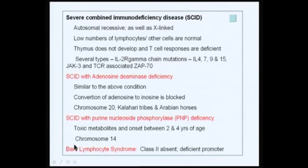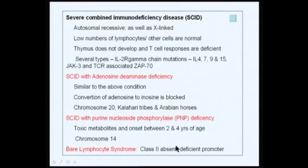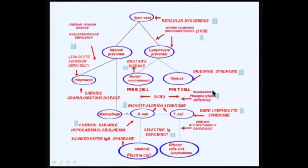Another type of SCID or deficient lymphocyte function comes from the Bare Lymphocyte syndrome, which is due to the absence of class 2 MHC molecules expressed on the surface of various kinds of T cells, because of a deficient promoter that helps in the transcription of the gene. Going back to the tree, we have covered PNP deficiency and the Bare Lymphocyte syndrome, which affects T cells, as well as Bruton's disease. Let us look at other diseases affecting B cells, called Wiskott-Aldrich syndrome.